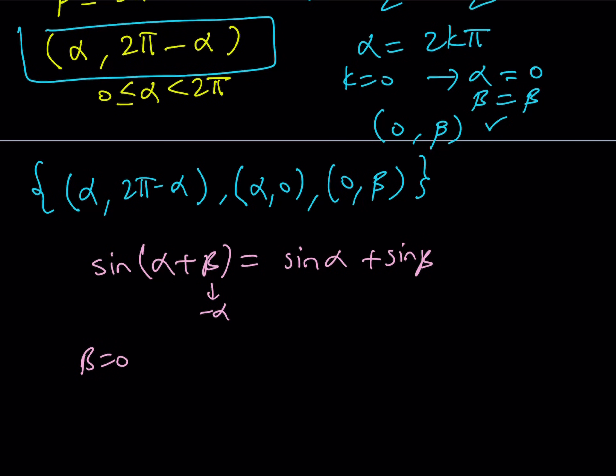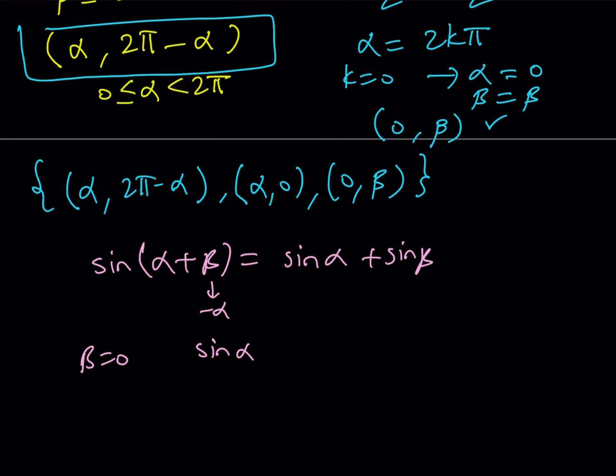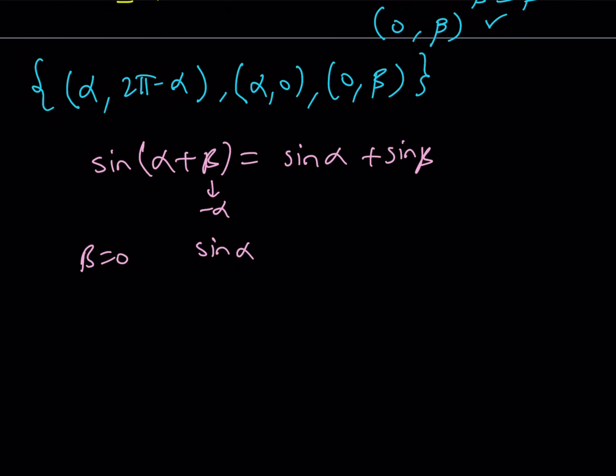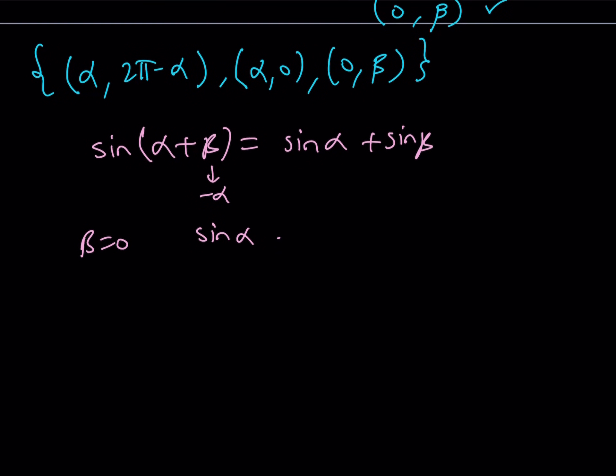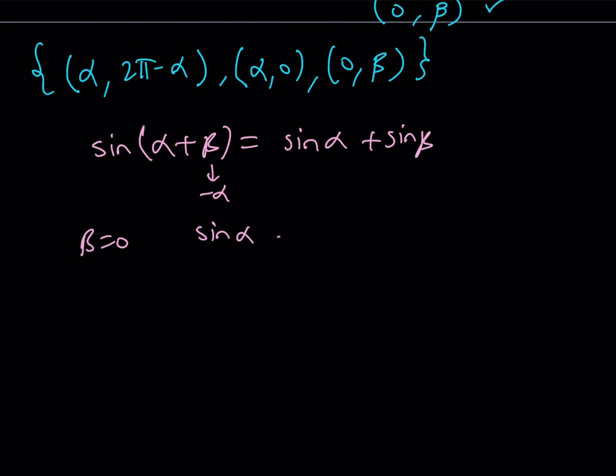If one of them is 0, say beta is 0, then you're going to get sine alpha equals sine alpha plus sine 0, which is 0. So, that's going to be true again. All the cases work here. And those are all the solutions. And this brings us to the end of this video.